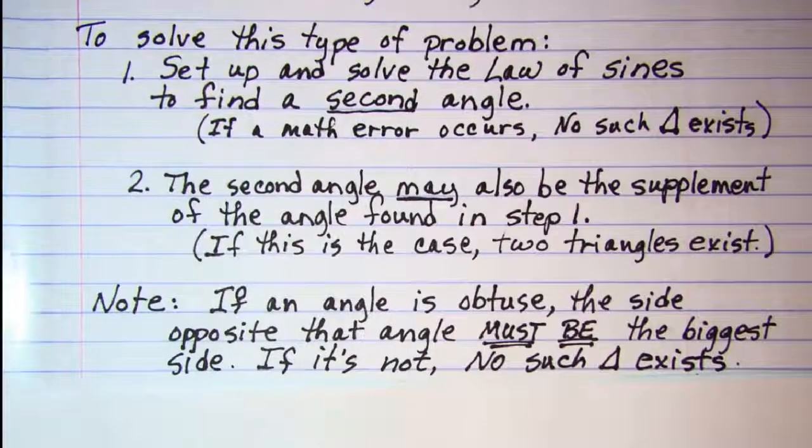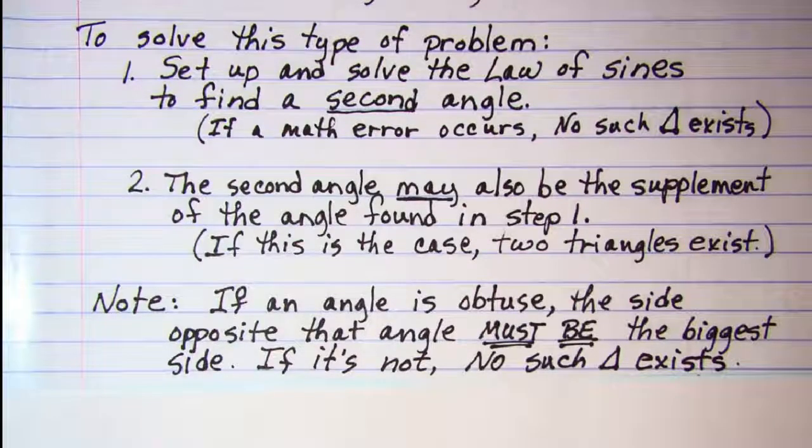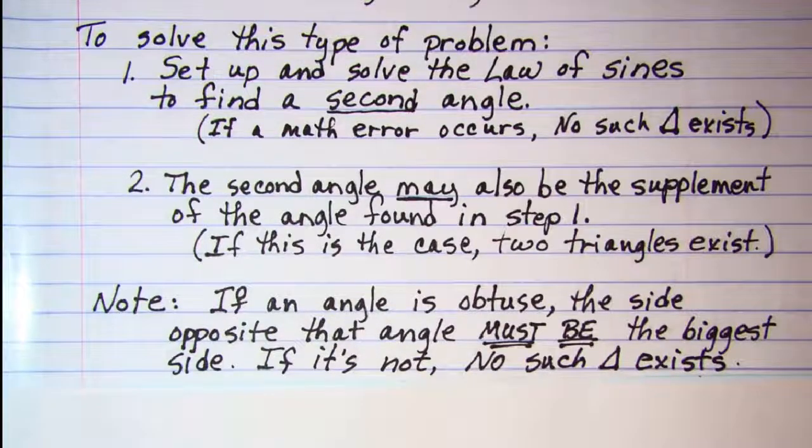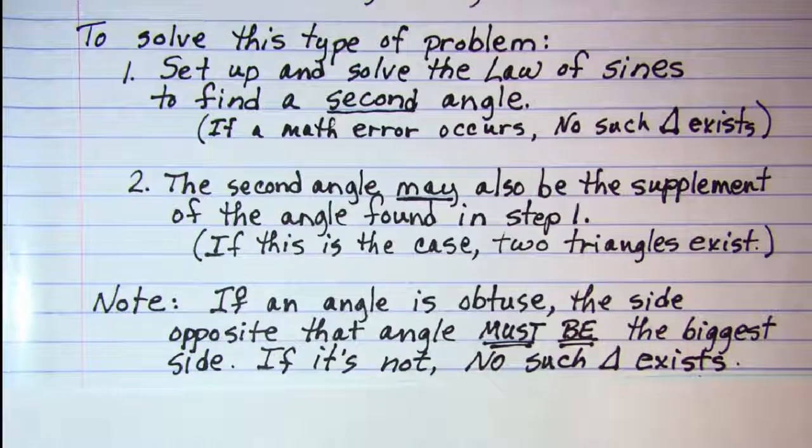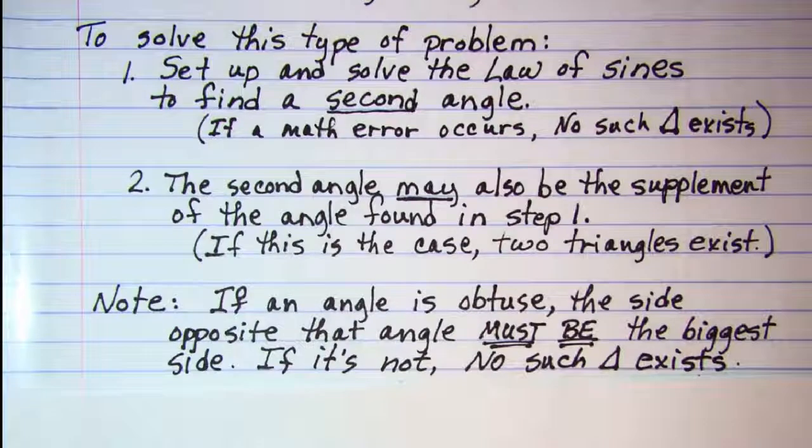Note, if an angle is obtuse, then the side opposite that angle must be the biggest side. If it's not, then no such triangle exists.